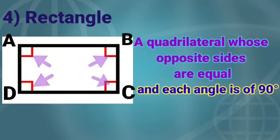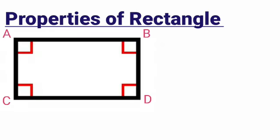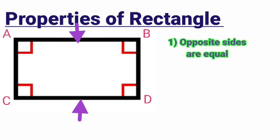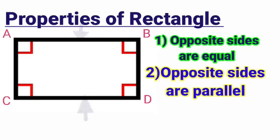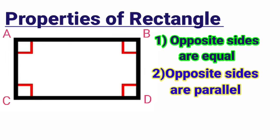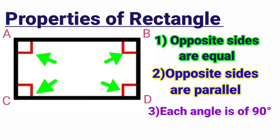Now let's see the properties of rectangle. Number 1: Opposite sides are equal. Number 2: Opposite sides are parallel. And number 3: Each angle is of 90 degrees.